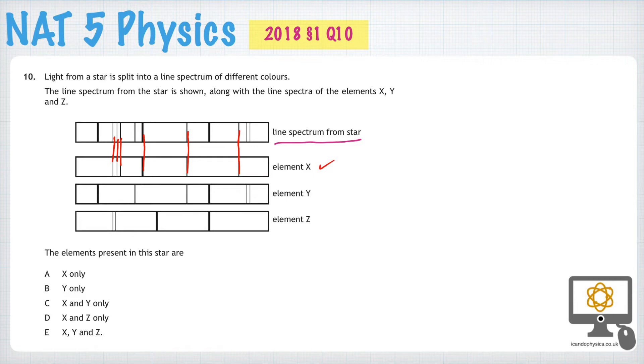Now let's focus on element Y and see if that's the case as well. Starting from the right again, element Y, these two lines are in the star, this line is in the star, this line is in the star and this line is in the star. So therefore element Y is also present in the star.